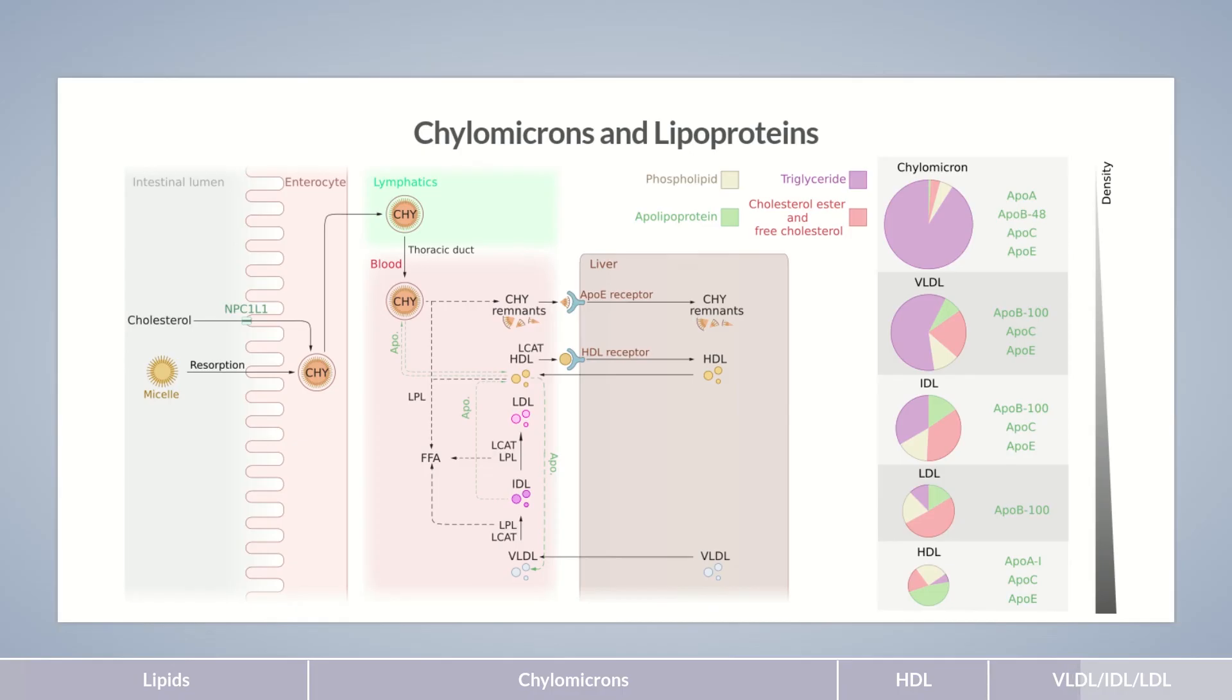LDL particles are mainly reabsorbed by the liver via ApoB. Almost half of the LDL particles' content is cholesterol, making it the lipoprotein with the highest cholesterol content of all lipoproteins. The cholesterol, which stems mainly from the liver, is required physiologically, for example, as a membrane component or for hormone synthesis. It reaches the cells via lipoproteins.